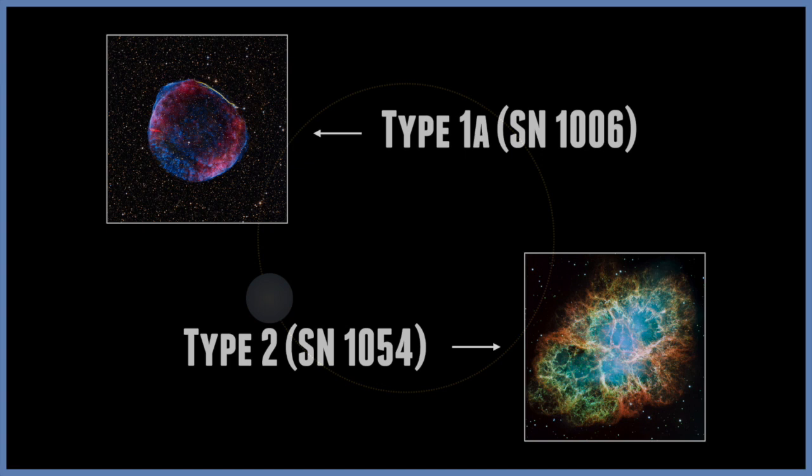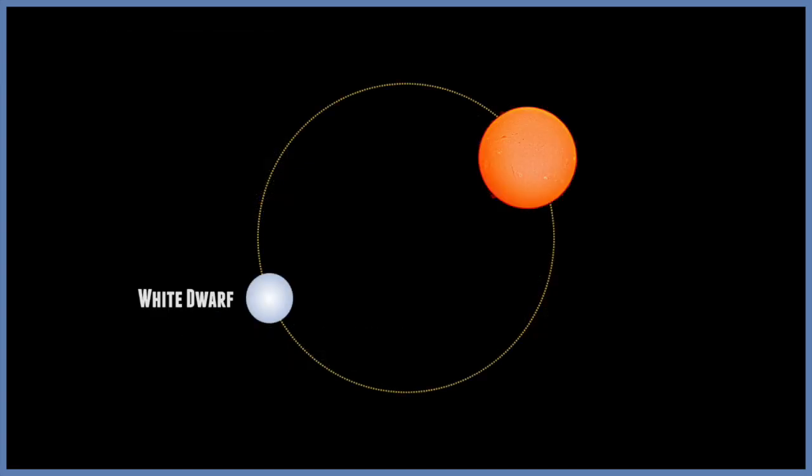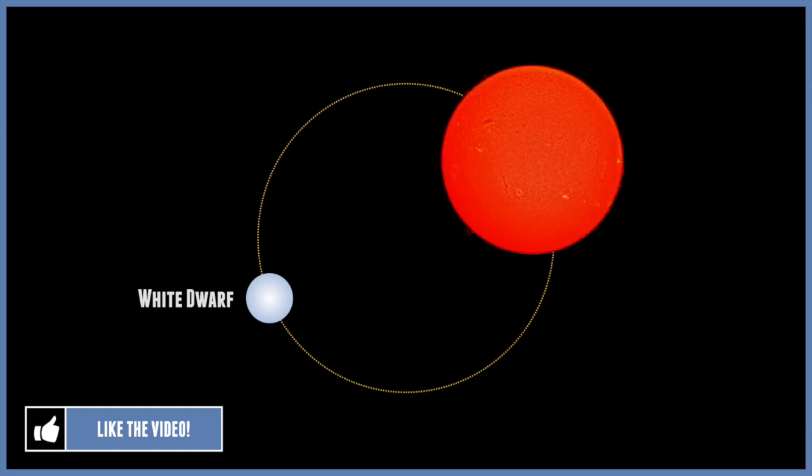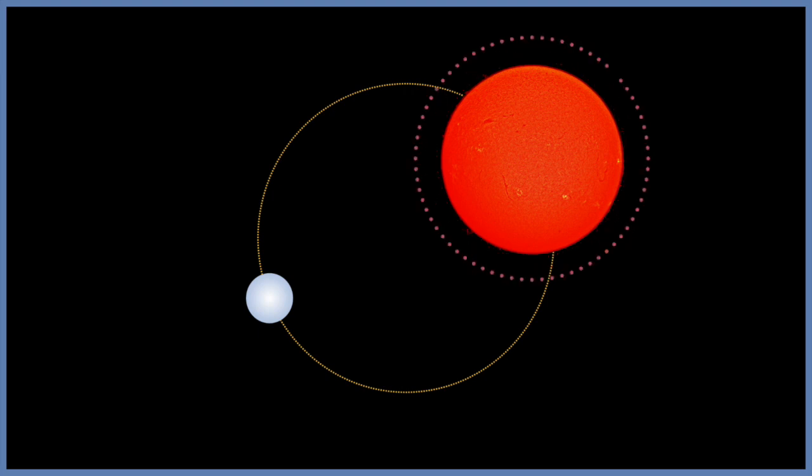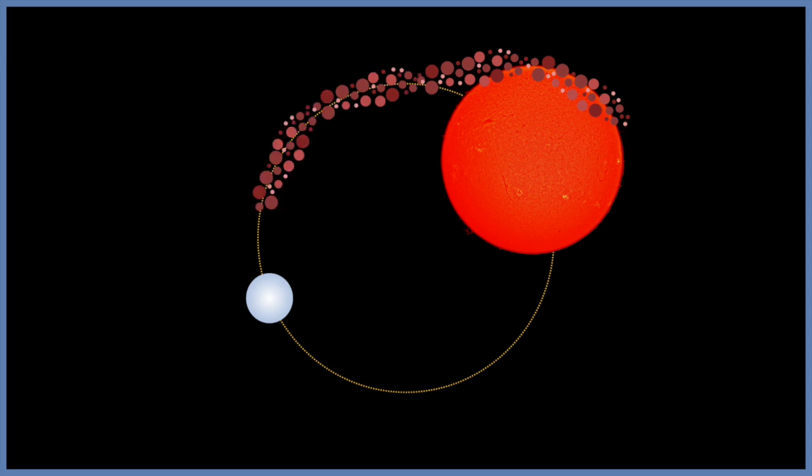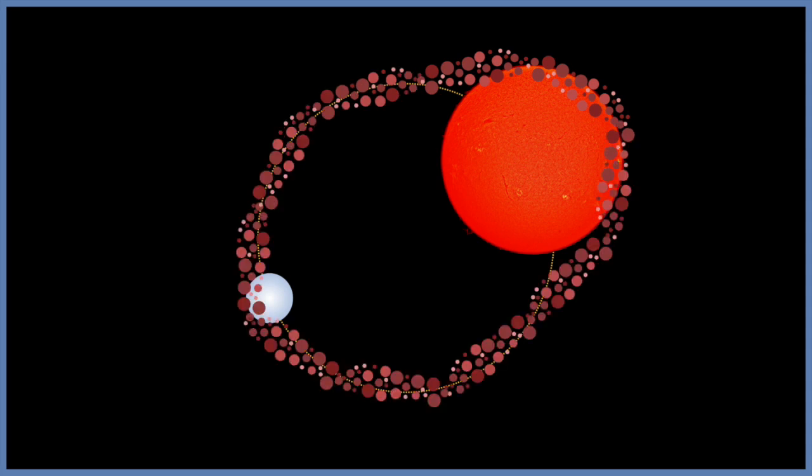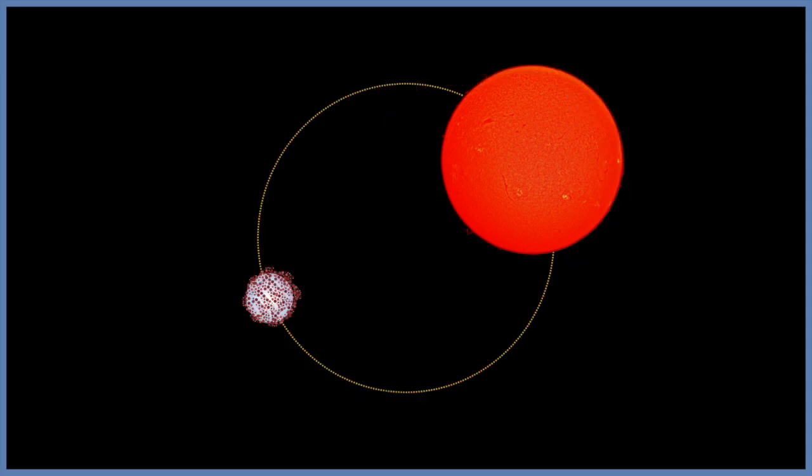The first method is caused by a white dwarf in a binary system. If the companion is very close to the white dwarf, when it enters the red giant's stage, its outer layers can be pulled off by the white dwarf. If enough matter is transferred from one star to the other, the mass of the white dwarf will continue to increase, until it reaches a critical mass.